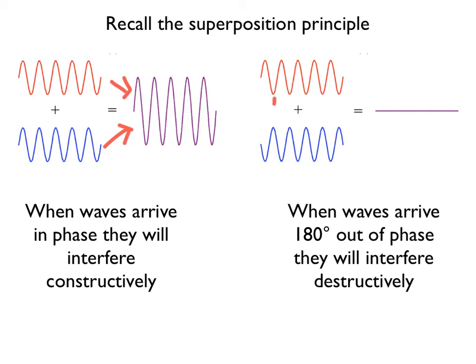On the right-hand side we have two waves which are 180 degrees out of phase, and when they mix together they will cancel and we get nothing.